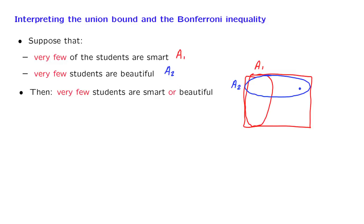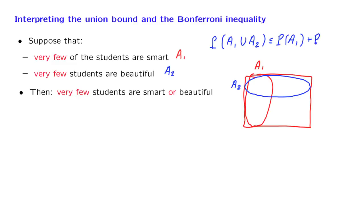What does this have to do with probability? Well, when we say very few are smart, we might mean that if I pick a student at random, there's only a small probability that I pick a smart student. And similarly for beautiful students. We have the union bound that tells us that the probability that I pick a student that is either smart or beautiful is less than or equal to the probability of picking a smart student plus the probability of picking a beautiful student. So if each probability is small, then there's only a small number of students that are either smart or beautiful.